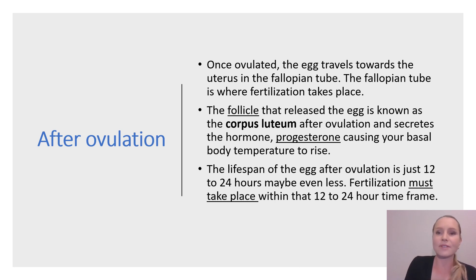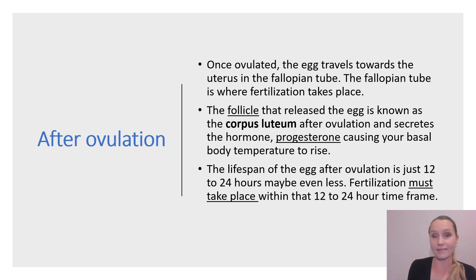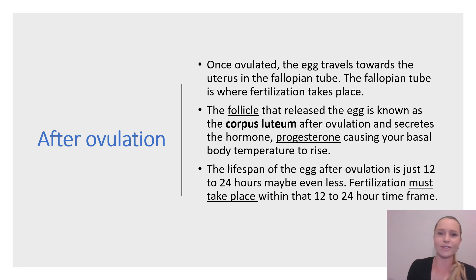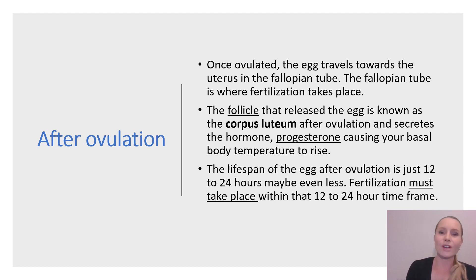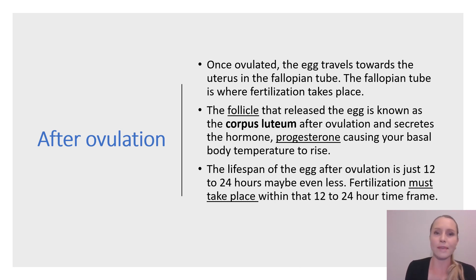The lifespan of the egg after ovulation is just 12 to 24 hours — so that's one day, maybe even less. I think that shocks a lot of people because they think, wow, I have this cycle that goes for 28 to 32 days, and my egg is only alive and viable for up to 24 hours. Fertilization must take place within that 12 to 24 hour time frame, because after this, the egg begins to degenerate and is no longer capable of being fertilized.